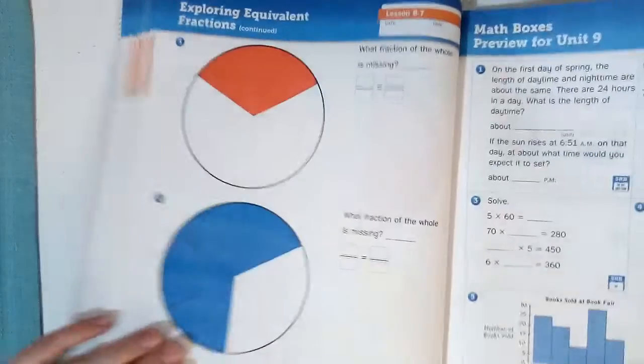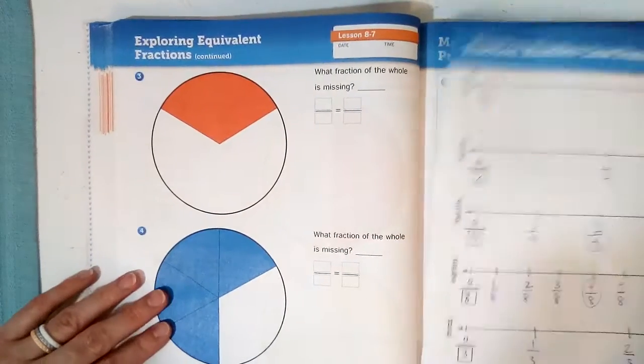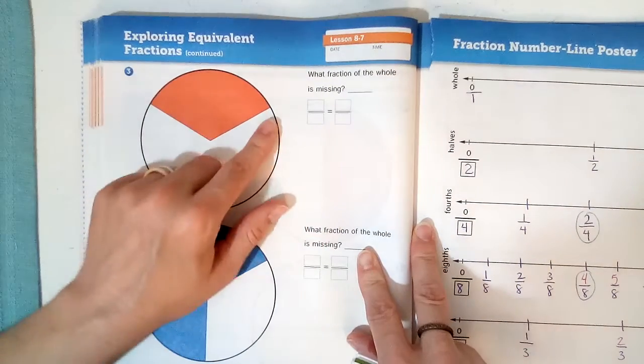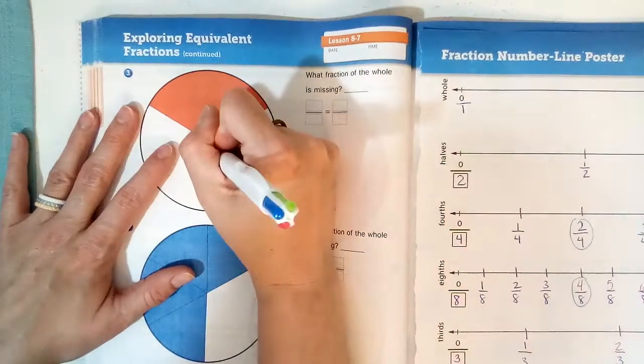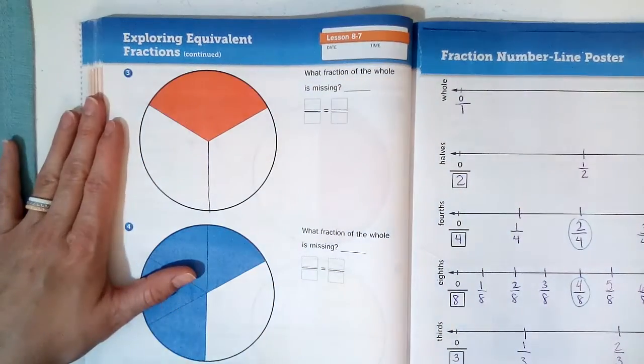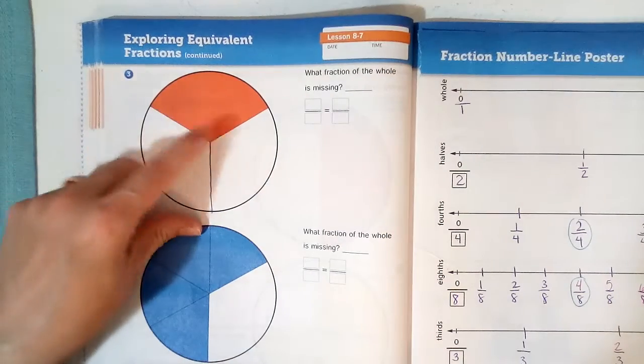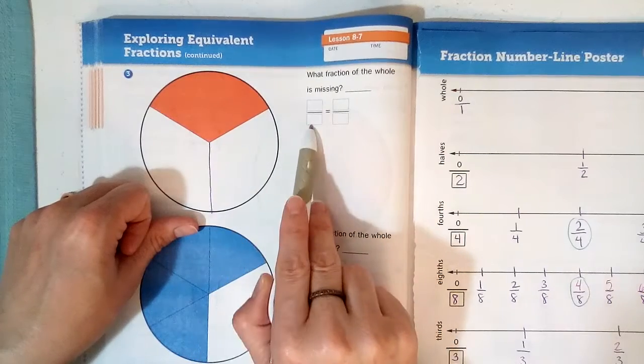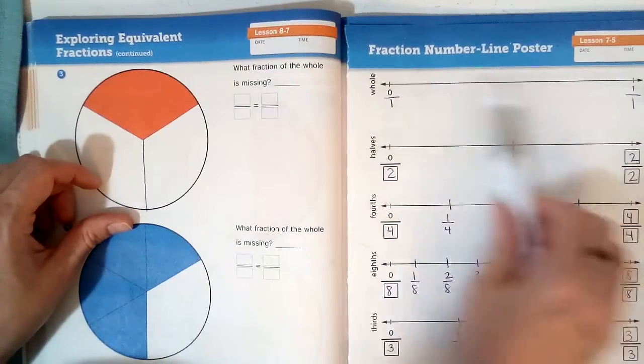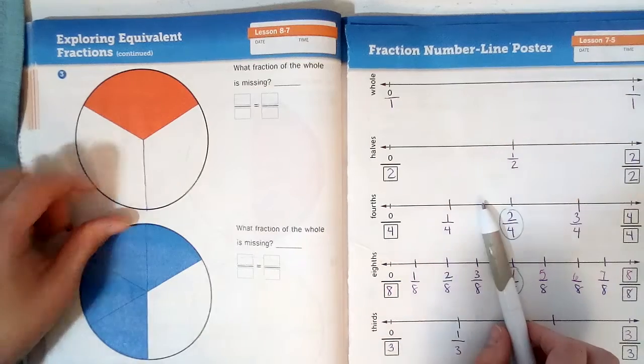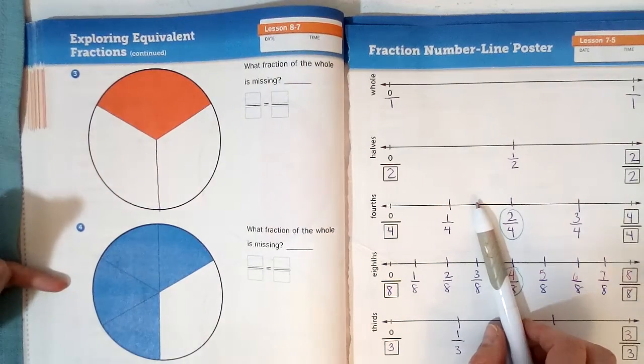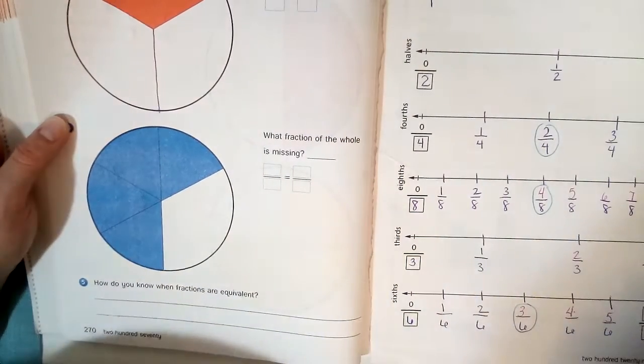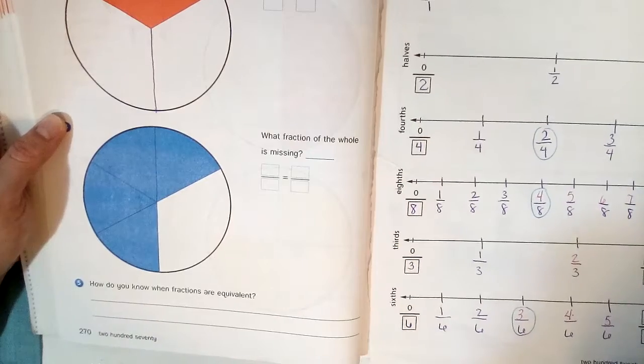You will see another exploring equivalent fraction. And this time, oh no, this isn't, that's one big piece. But they're trying to trick you. Pull your little line down like that. How many pieces did they mean there to be? That's the secret. And find what is missing. Write the missing fraction. Use your chart or the back of the book to decide what is missing. Same for number four. And number five says, how do you know when fractions are equivalent? How do you know when they are equal? What's the signal?